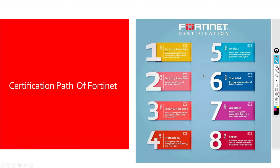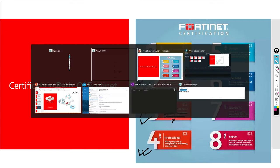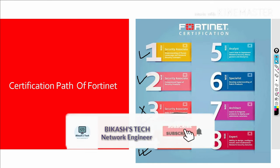Now let's talk about the Fortinet certification path. It goes from NSC 1 through NSC 8. NSC 1 and NSC 2 can be done online. NSC 1 and 2 are primarily for sales trainers and Fortinet employees or partners. If you are a partner or sales trainer you need those, but otherwise start with NSC 4, which requires going to an exam center. Let me go to the Fortinet website to walk through this.